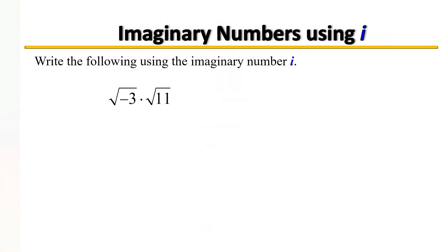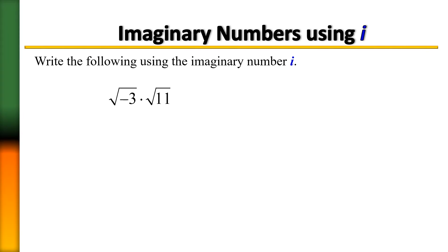For the next multiplication example with negative square roots: the square root of negative 3 equals i√3, and we're multiplying that by √11. Multiplying outside by outside gives i, and inside by inside gives 33. So the answer equals i√33.